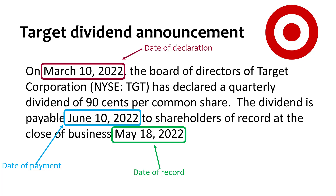The date of payment is June 10. The payment of the dividend usually follows the record date by a week or more.